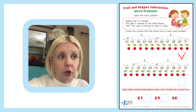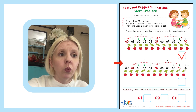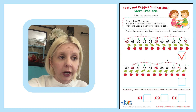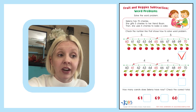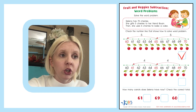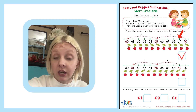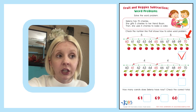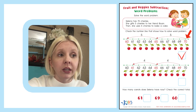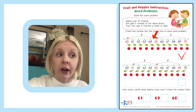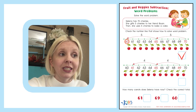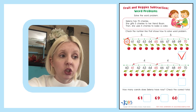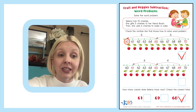Down below it says how many cherries does Selena have now? Check the correct total. We're going to follow the number line that we said made sense and find the correct answer. After we subtracted 5 from 70 we got 65, and then we subtracted again because she used 5 to bake a cake, which leads us down to 60. So how many cherries does Selena have now? The answer is 60.